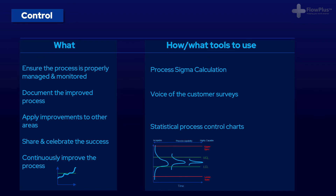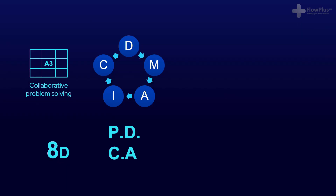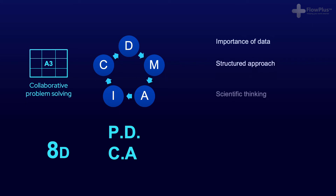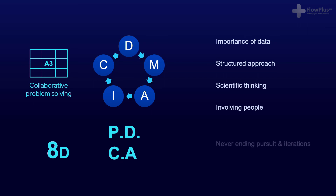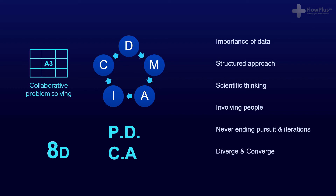The DMAIC improvement process is one of many structured problem solving approaches and everyone has their personal favorite, each with their own merits. My personal favorite is the nine-step process explained in the collaborative problem solving module, as I believe it is more structured and clearer to follow. But whatever approach you take — whether it be the automotive favorite of 8D, the A3 problem solving approach, or the PDCA cycle — they all share very similar principles: the importance of using data to make decisions, following a structured approach with scientific thinking, involving a team of the right people, and the iterative nature of problem solving in cycles.